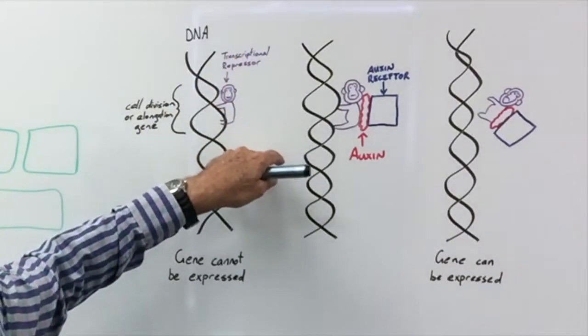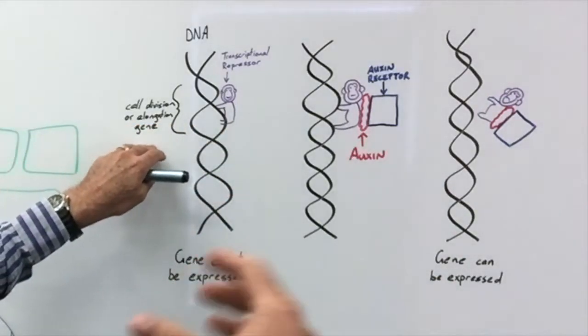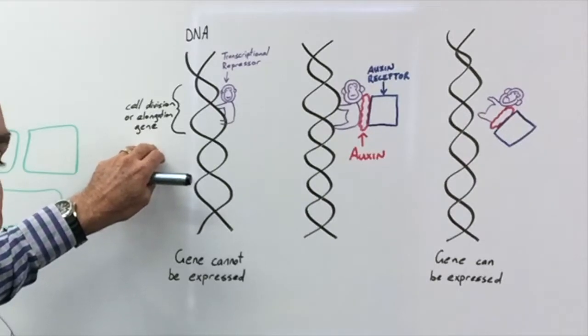It's called a transcriptional repressor. With the monkey on its back, the gene can't be expressed. Without the gene being expressed, there's no cell division or cell elongation, so the plant isn't growing.